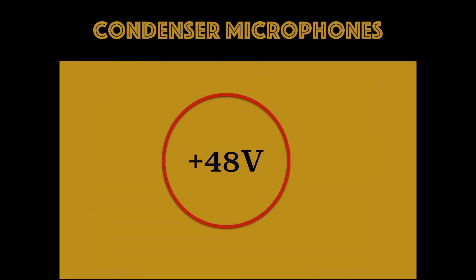Let's get into condenser microphones now. Condenser microphones actually use a capacitor, which is a device that stores an electric charge. Unlike dynamic microphones, condenser microphones require an external source of power. This is known as phantom power, or that plus 48 volt button you might see on mic preamps. This is the obvious difference between the two types of microphones.